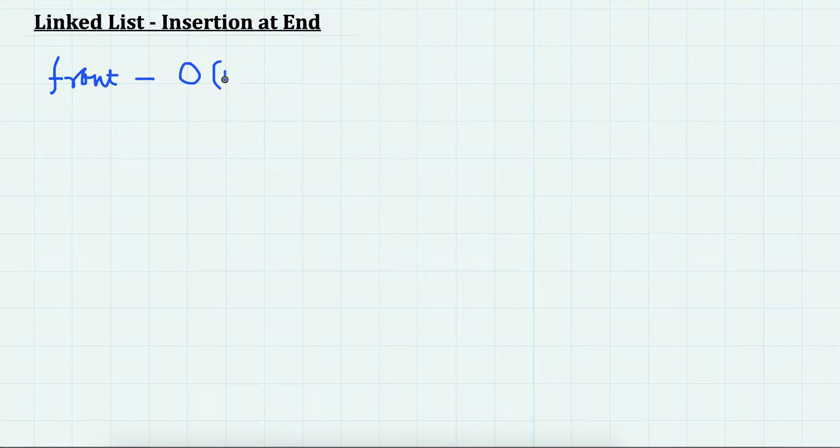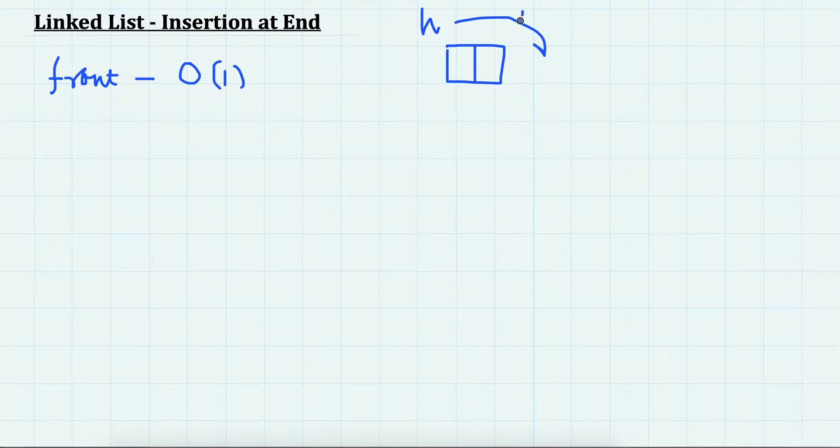In our last lecture we saw insertion into a linked list at the beginning of the list. Every time we inserted a new node, the head node was updated because head is the pointer to the first node in the linked list. In this lecture we are going to see how we can insert a new node at the end of the linked list. Insertion at the beginning was O(1) because we just created a new node, made head point to it, and its next point to whatever head was pointing to earlier.